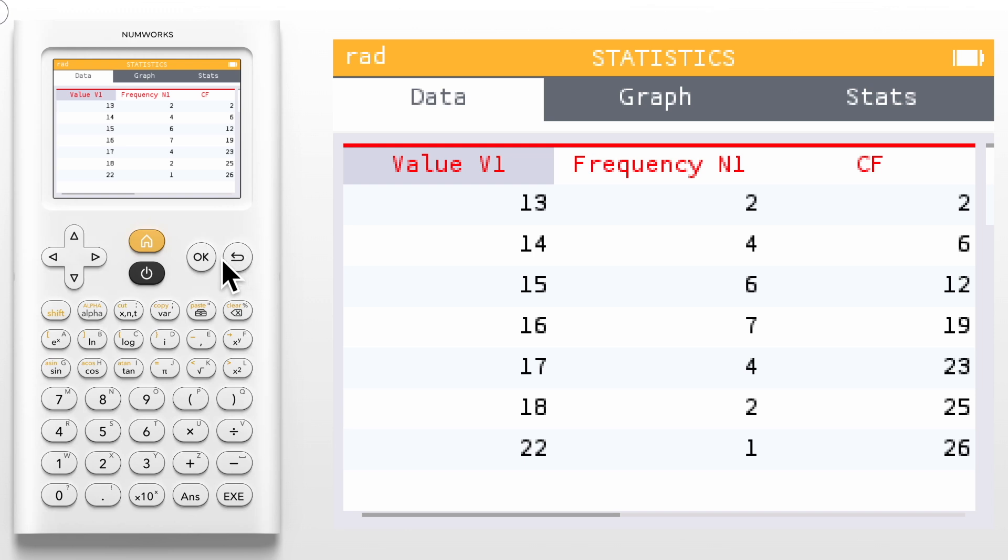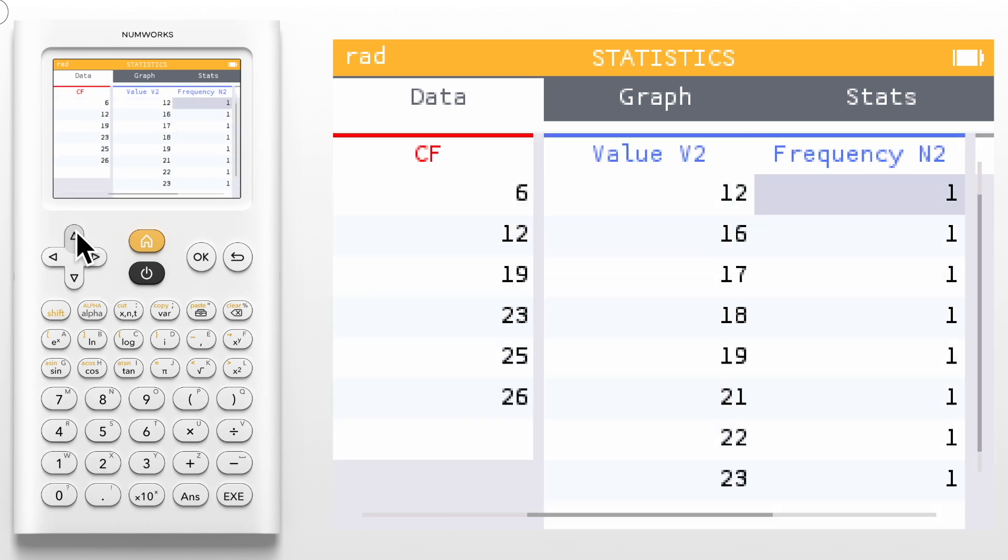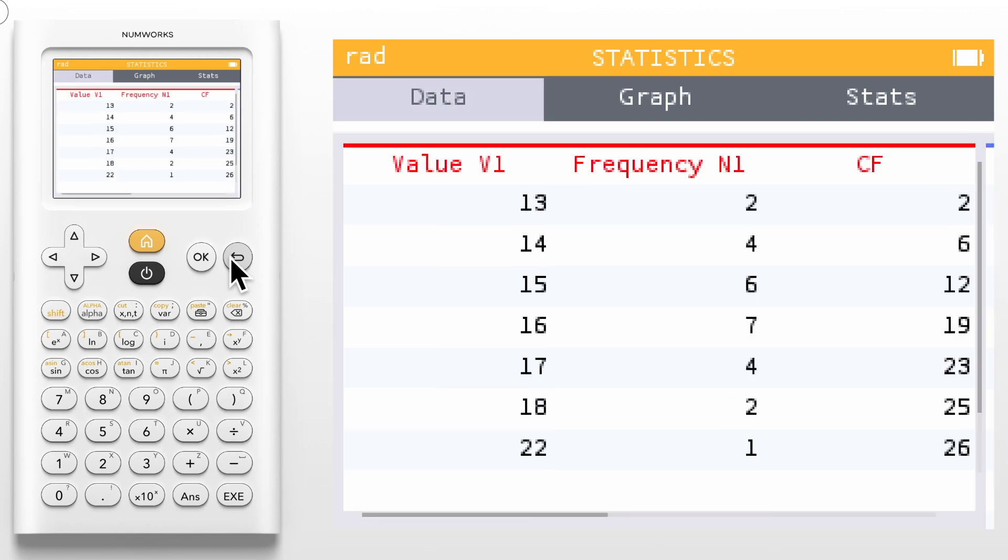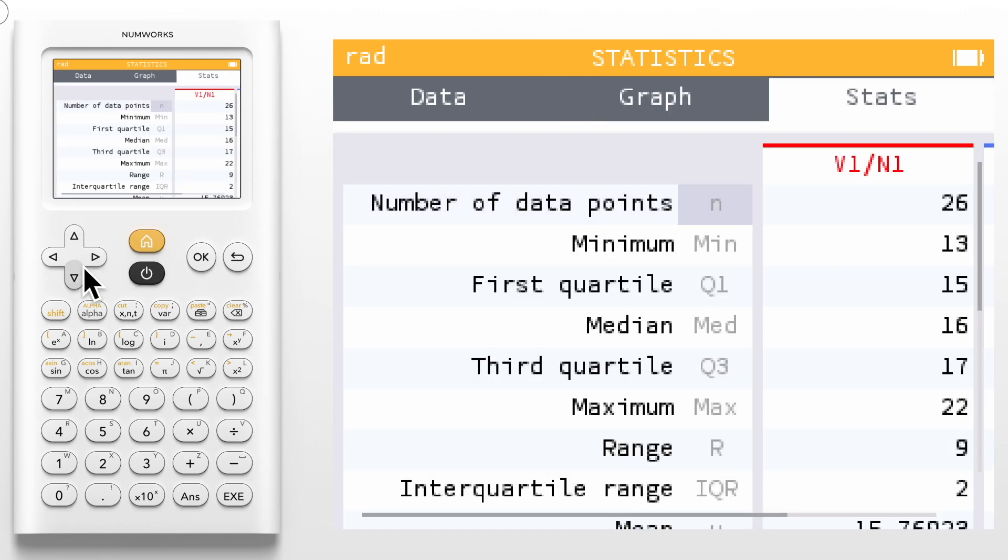Comparing distributions is easy with the statistics app. We'll just add a second data set. When two or more data sets are entered you can compare the data sets using the graphical displays as well as the summary statistics. We'll return to the graph tab to view the parallel box plots. Use the up and down arrows to view values from either data set. And back on the stats tab we use the right arrow to view the summary statistics for both data sets.